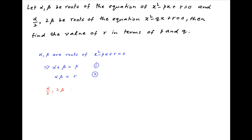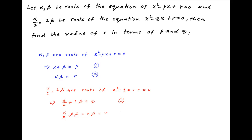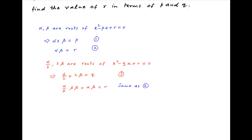We are also given that alpha upon 2 and 2 beta are the roots of the quadratic equation x squared minus qx plus r is equal to 0. Therefore, the sum of the roots alpha upon 2 plus 2 beta is equal to q, and the product of the roots alpha upon 2 times 2 beta, which equals alpha beta, is equal to r. Let's denote the first of these results by 3. Note that the second result, alpha beta equals r, is the same as result 2 derived above, so there is no additional information here.